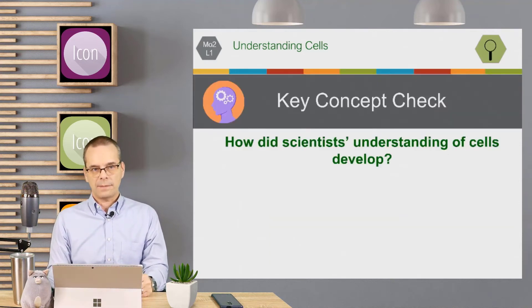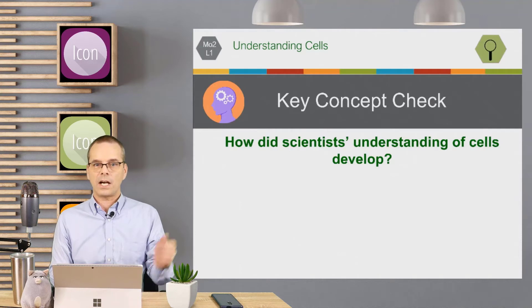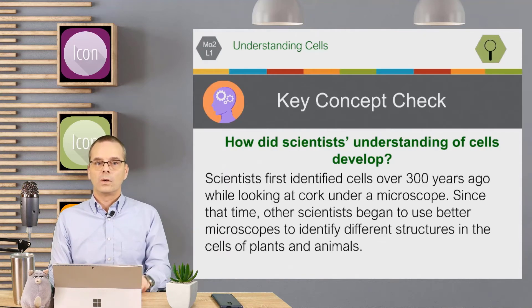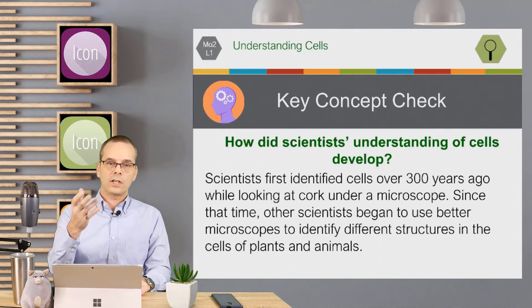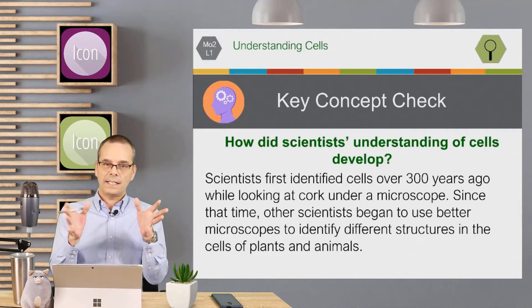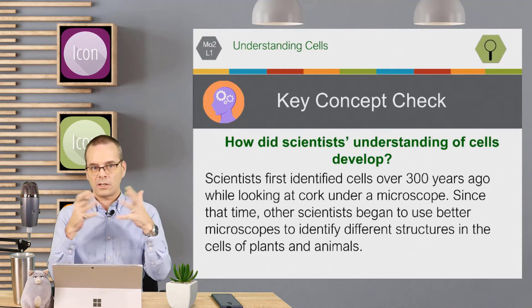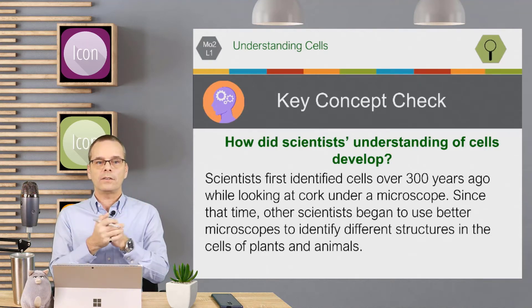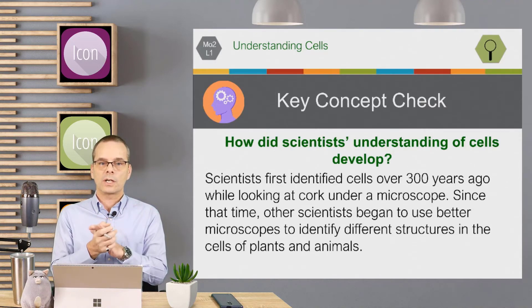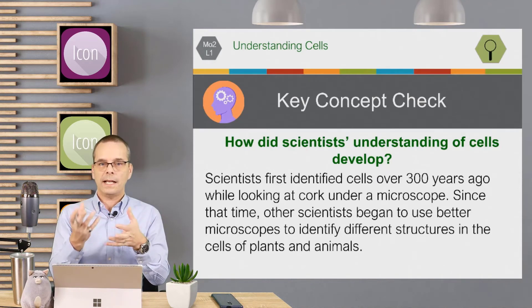Key concept check: how did scientists' understanding of cells develop? It all started with that one scientist who, over 300 years ago, started looking at cork under a microscope. Once he did that and identified cells, all the other scientists began to use much better microscopes to identify other structures on plants and animals.